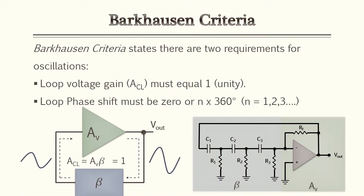Within references and textbooks, the first thing that comes up when referring to oscillators is the Barkhausen criteria. The Barkhausen criteria states there are two requirements for oscillation: the loop voltage gain must be equal to one (unity), and the loop phase shift must be equal to zero, or at least 360 degrees.